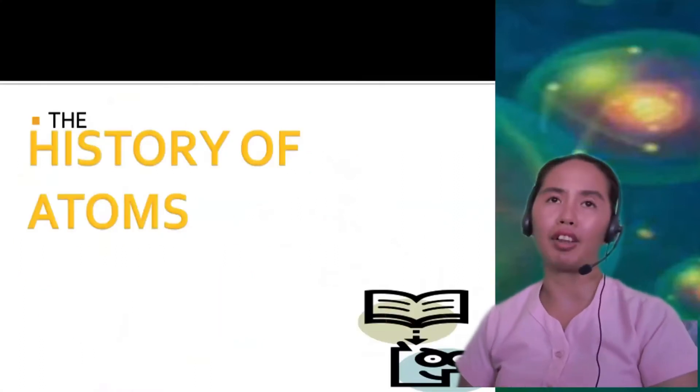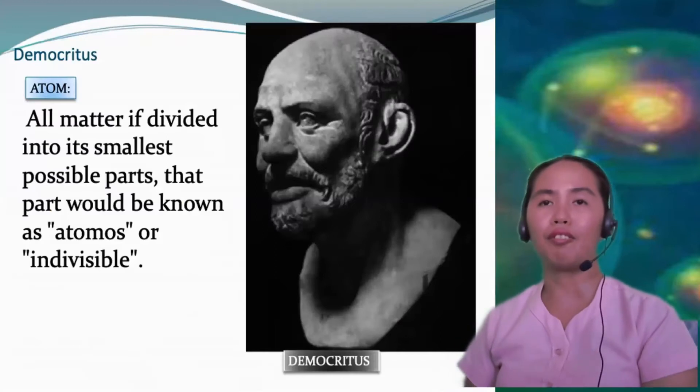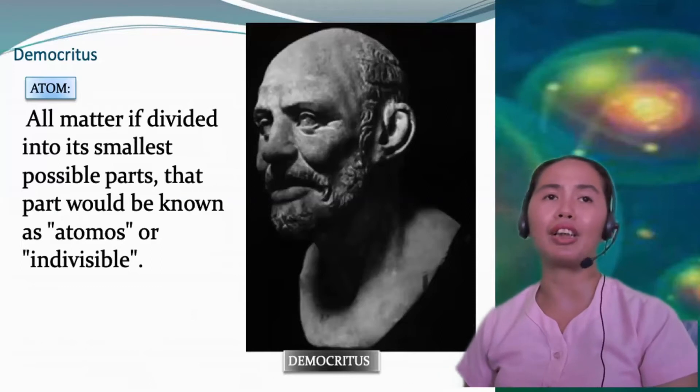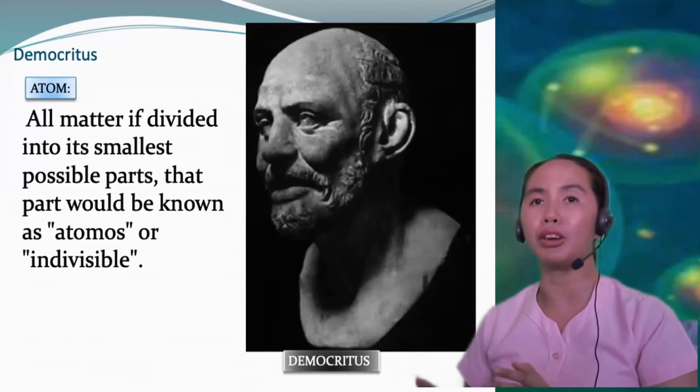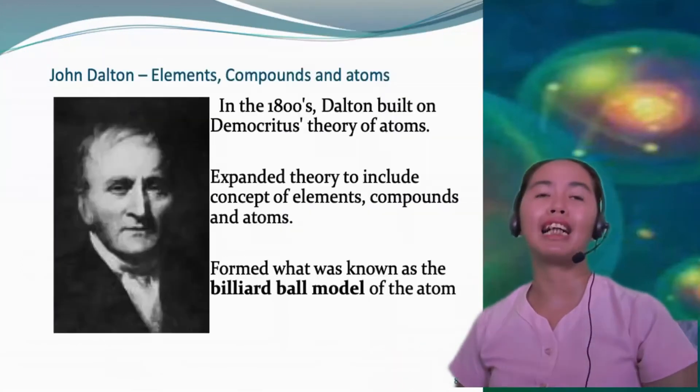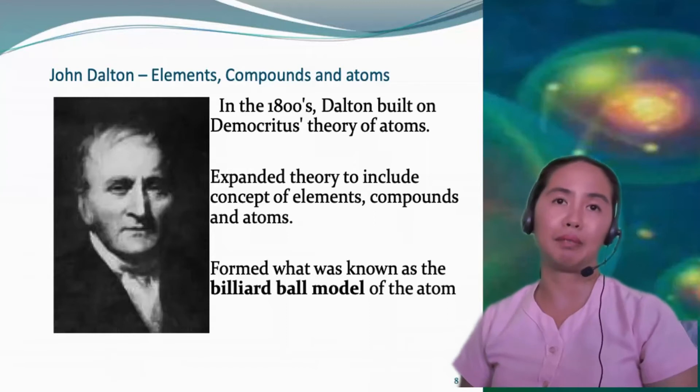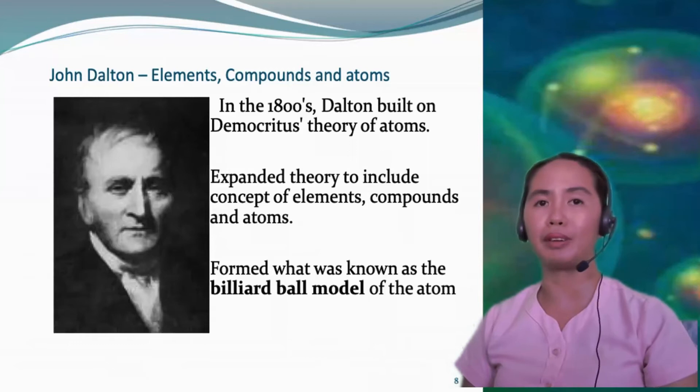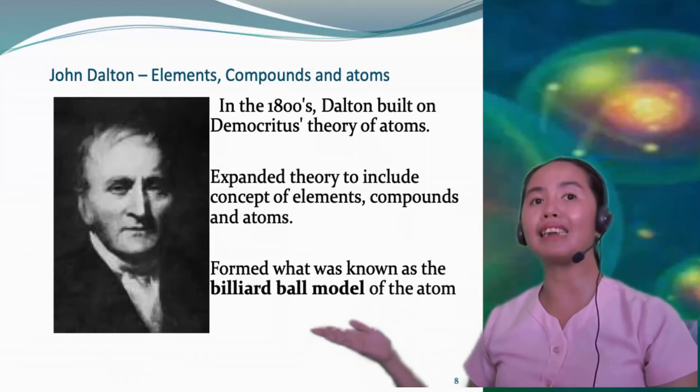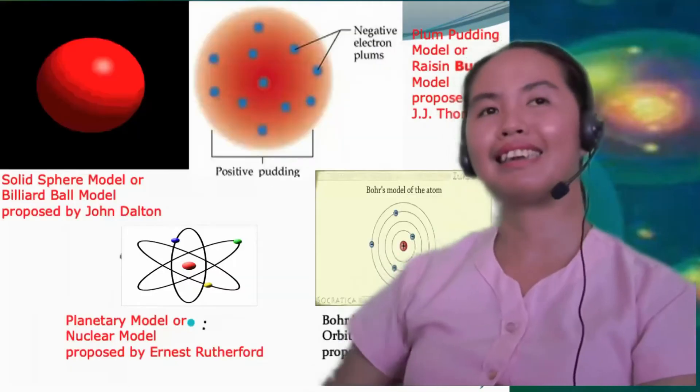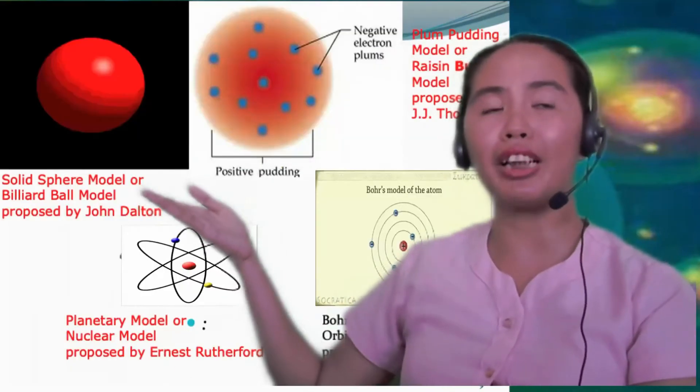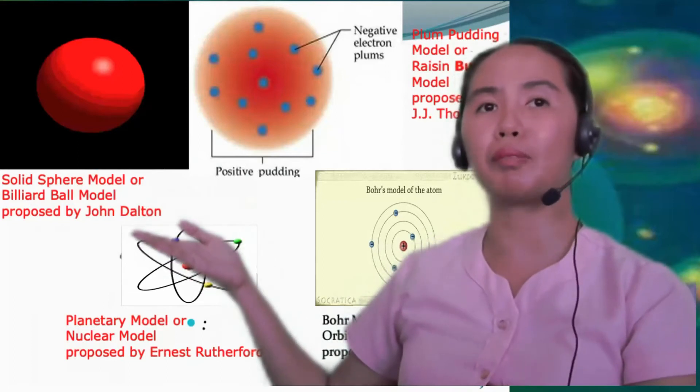This time, let us discover the history of atoms. The first one is Democritus. According to him, all matter if divided into its smallest possible parts, that part would be known as atomus or indivisible. We also have John Dalton. In the 1800s, Dalton built on Democritus's theory of atoms, expanded the theory to include concepts of elements, compounds, and atoms. And he formed what was known as the billiard ball model of the atom. So this is the solid sphere model, or billiard ball model, which was proposed by John Dalton.